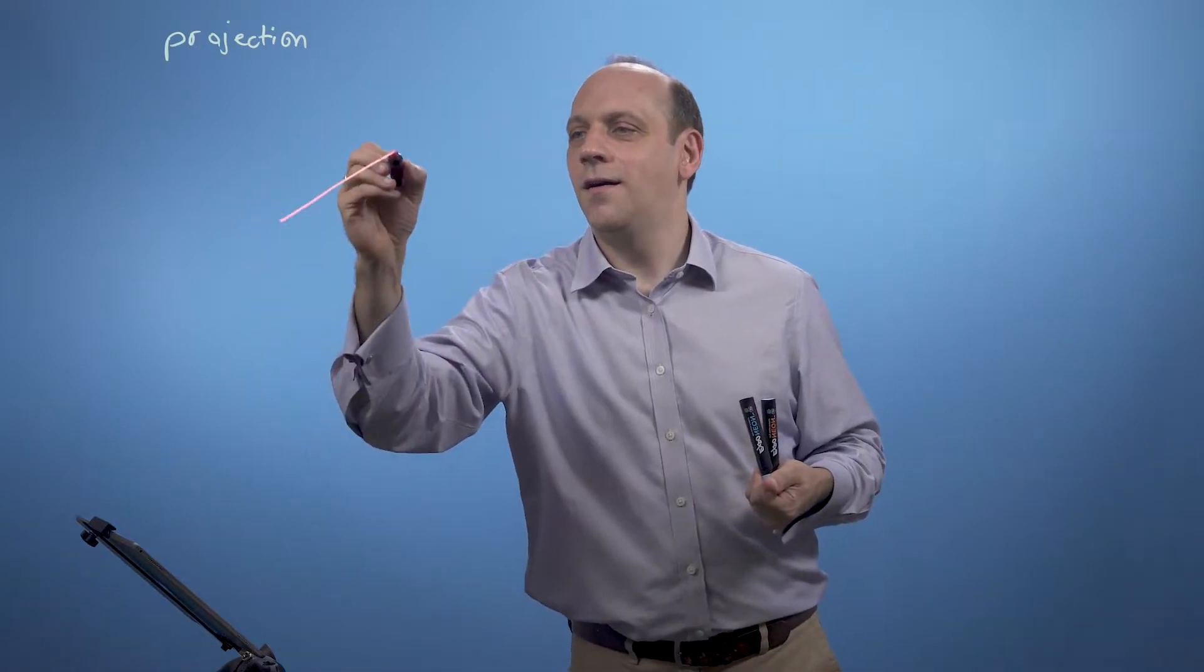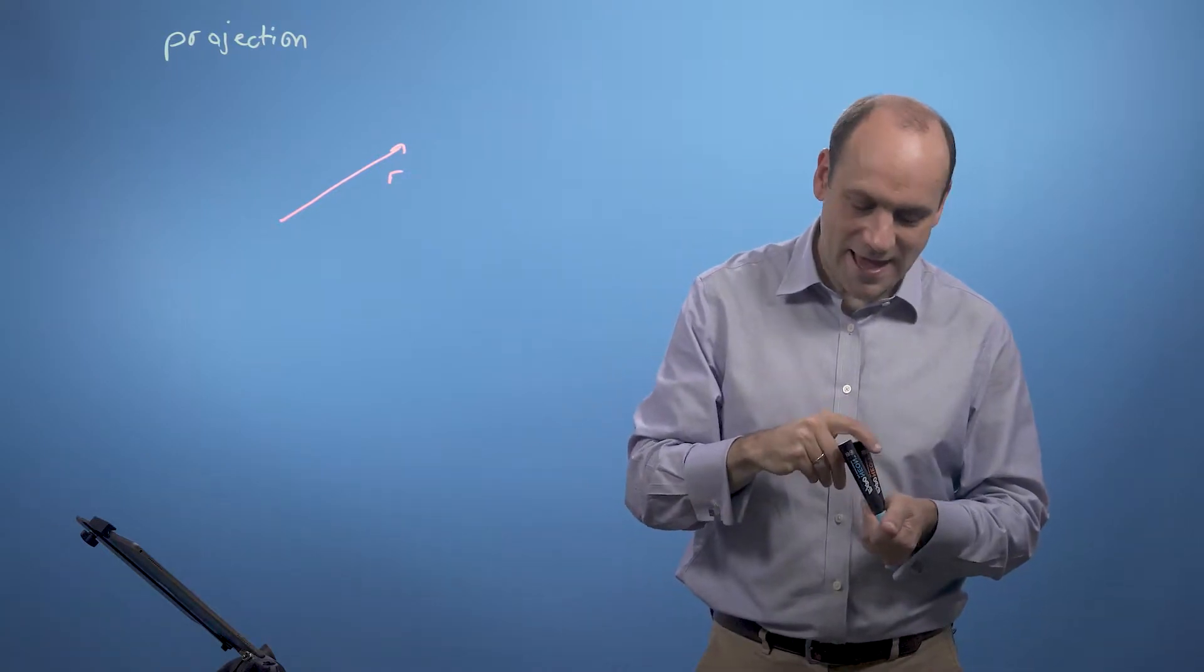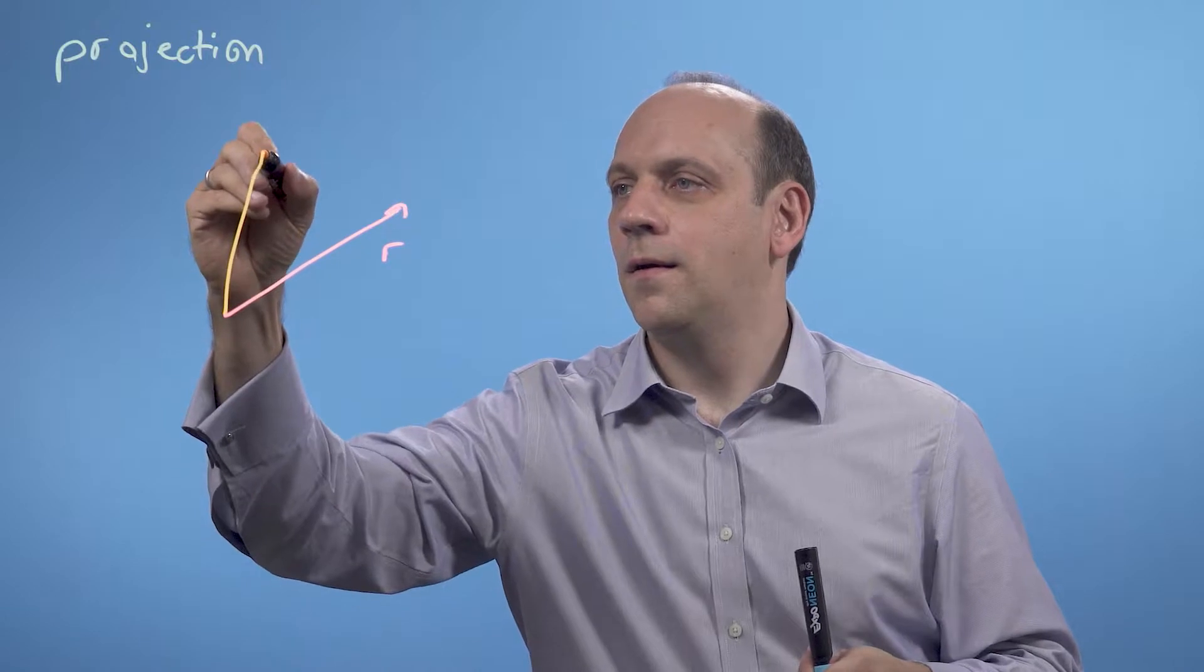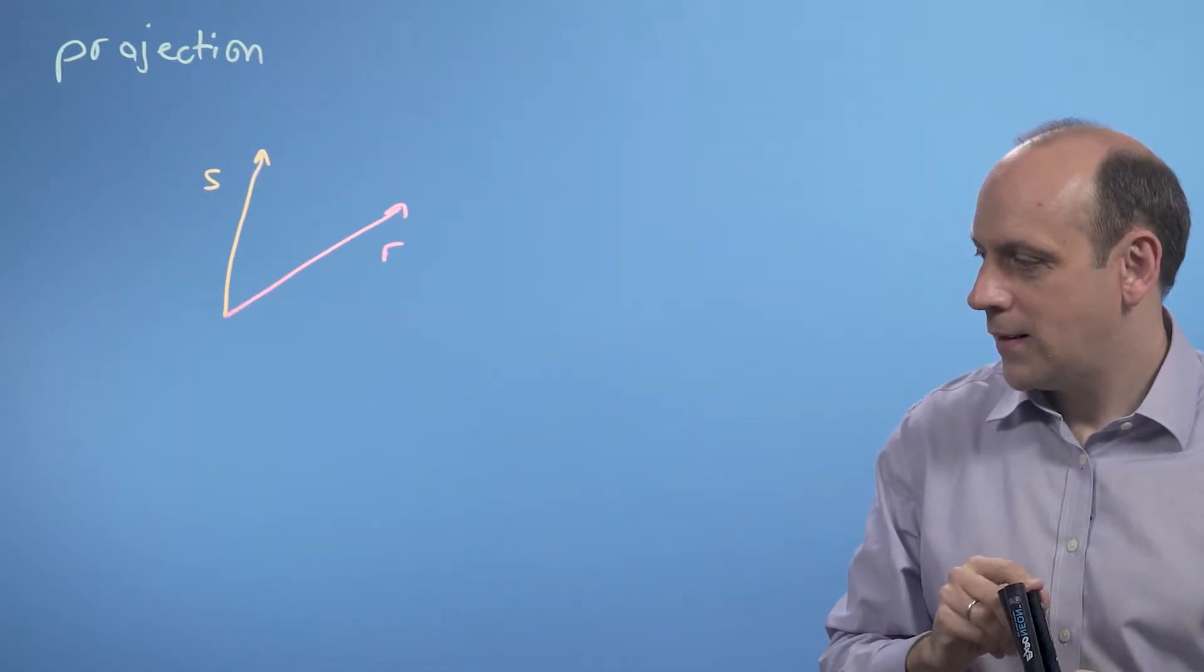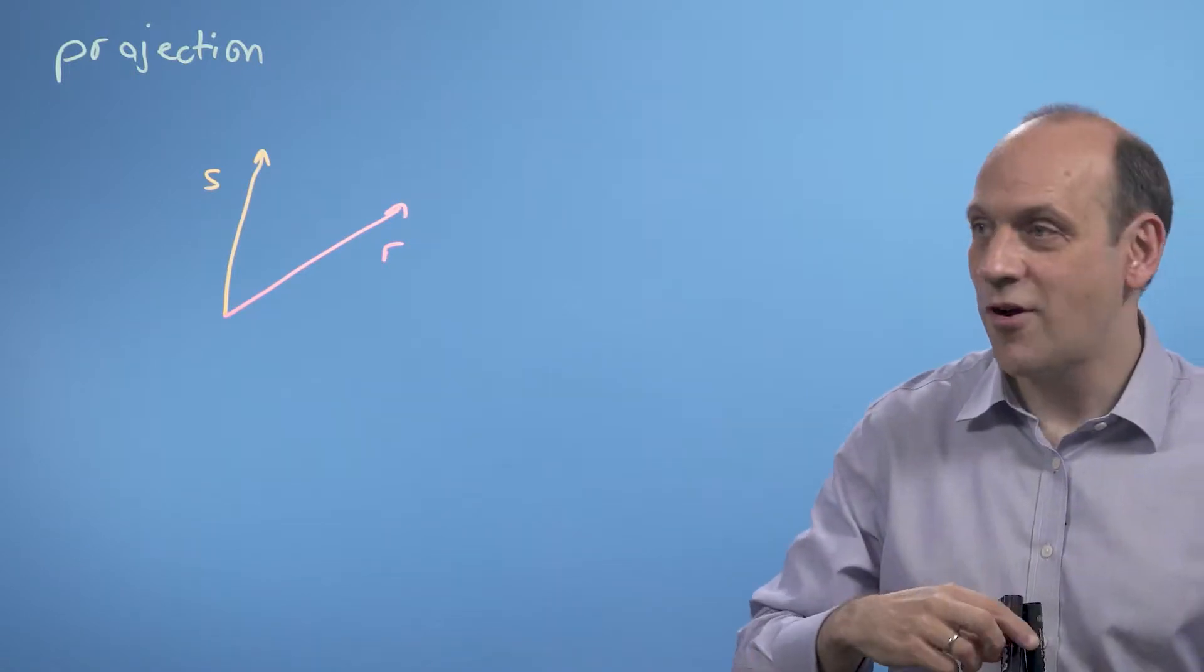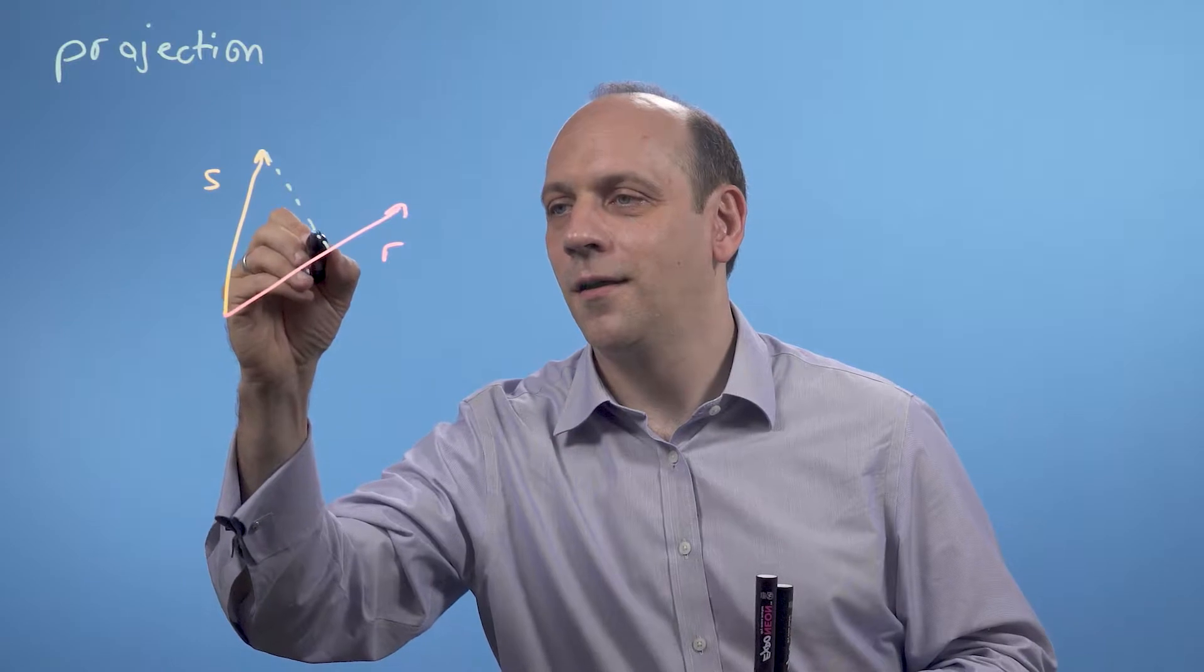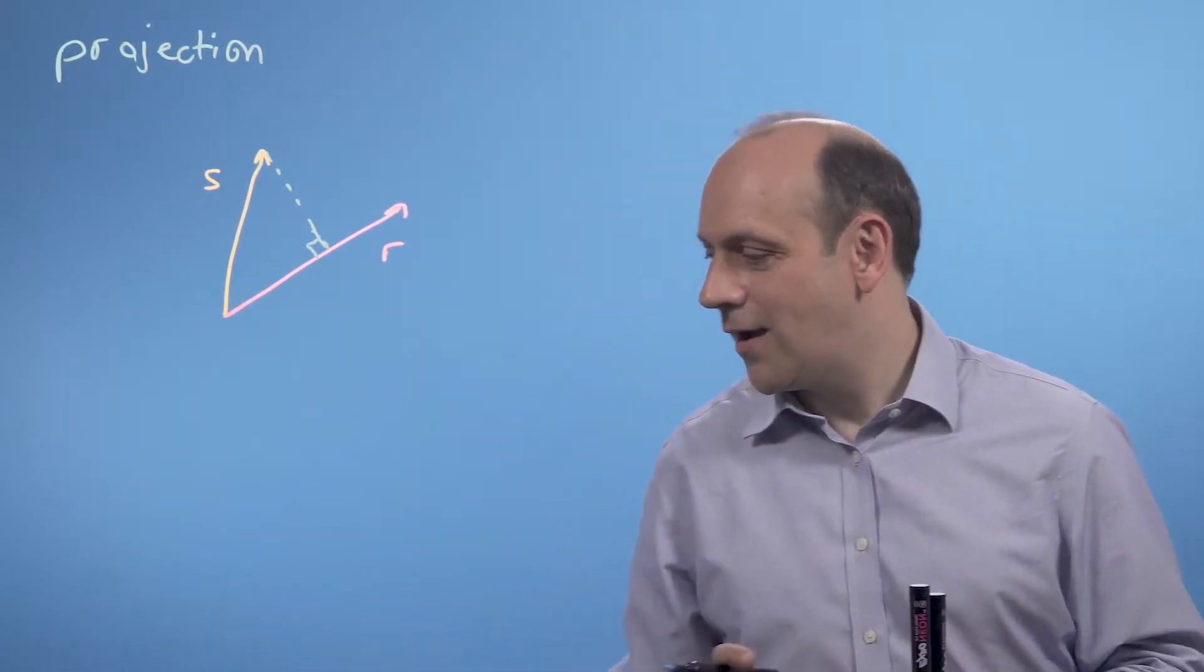So if I've got a vector r and another vector s. Now, if I take a little right-angled triangle, drop a little right-angled triangle down here, while this angle is 90 degrees, then I can do the following.